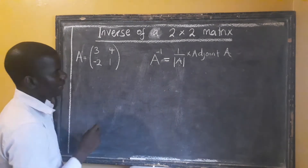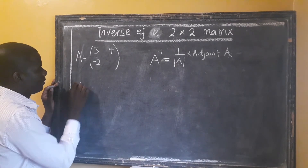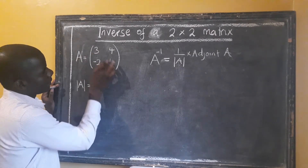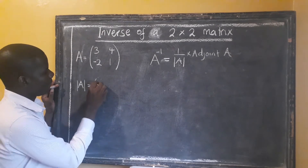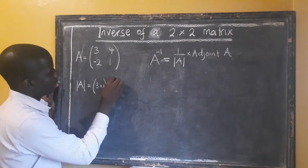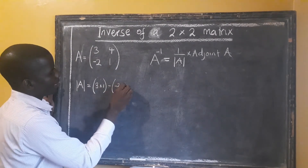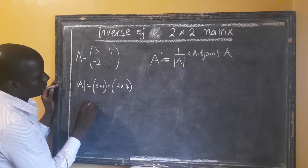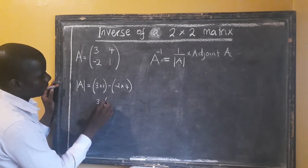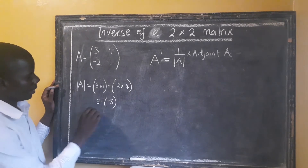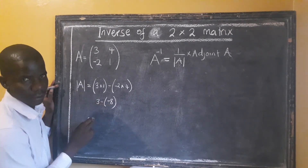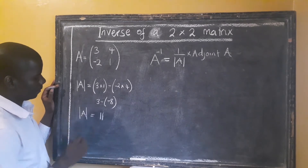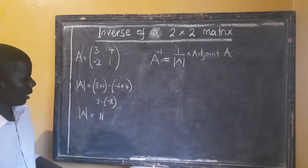How do we find the determinant of the matrix? The determinant of A equals the product of the elements in the main diagonal minus the product of the other diagonal. We have 3 multiplied by 1, minus negative 2 multiplied by 4. That gives us 3 minus negative 8, which simplifies to 3 plus 8. So we get 11 as our determinant.